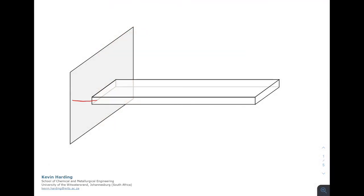Neatening the diagram up, we again have the wall on the left and the heat q flowing from left to right by conduction into this fin. Labeling the diagram: the wall is at temperature T_w, the thickness of the slab is defined as w, and the depth going into the back is also w for width. The temperature of the fin surface will be called T_s, and the ambient temperature around it will be T_a.